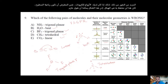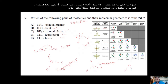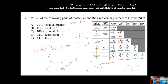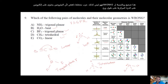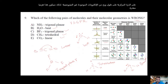For NH₃, it is not trigonal planar because nitrogen has a lone pair of electrons on the central atom, making the shape pyramidal. So NH₃ as trigonal planar is the wrong answer — it should be pyramidal.